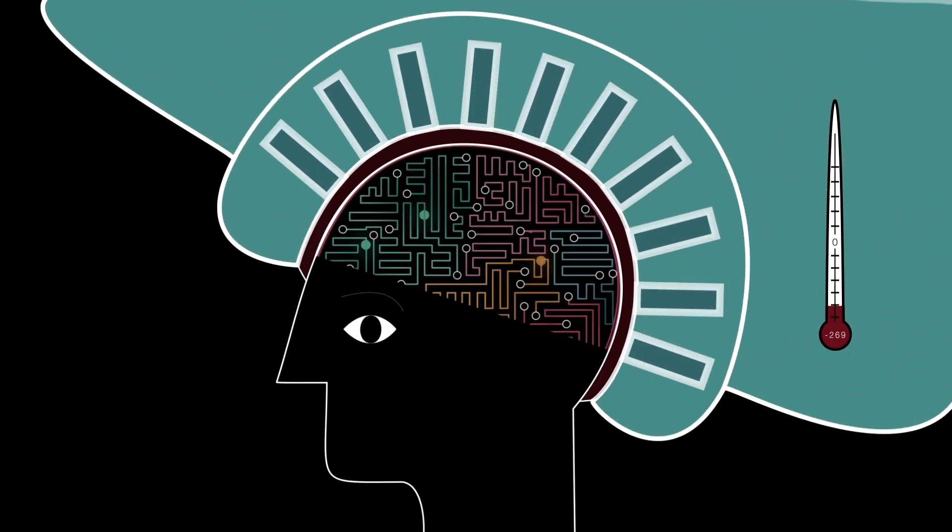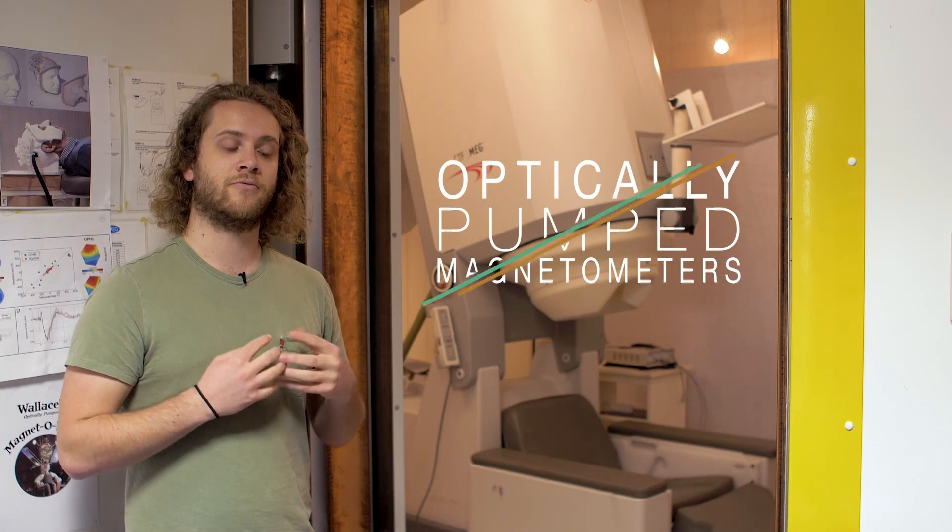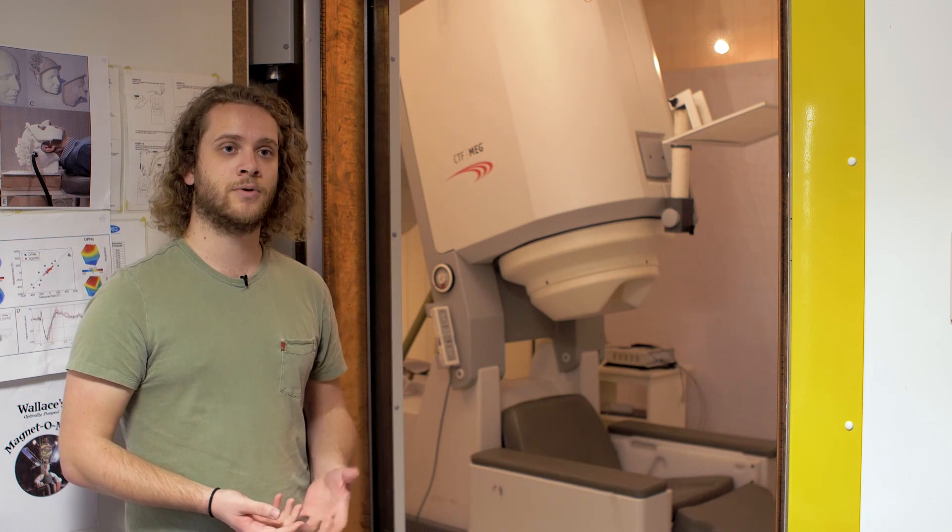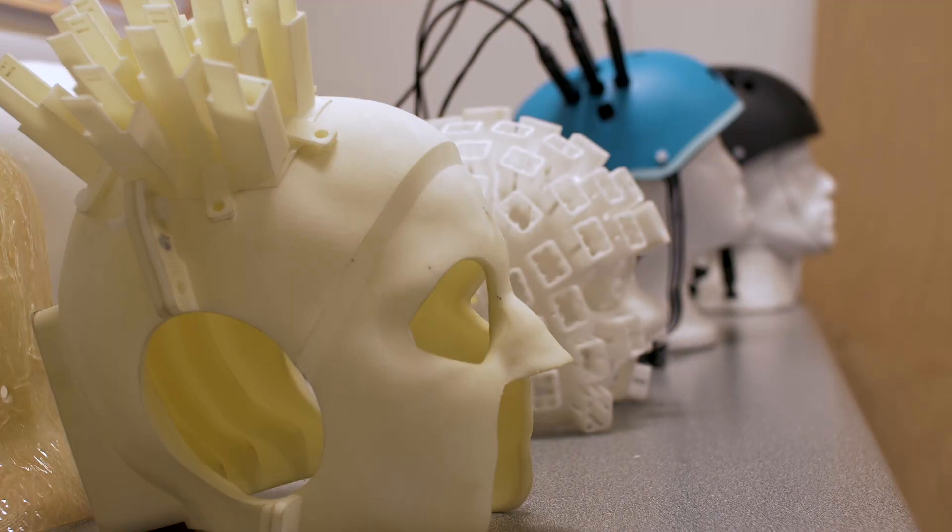The new sensors that we're developing are something called optically pumped magnetometers. These are room temperature sensors, so we don't have to keep them cool. We also don't have to keep them far away from the head; we can put them directly on someone's scalp. So in order to keep the sensors on someone's head, we have to put them inside a sensor cast.